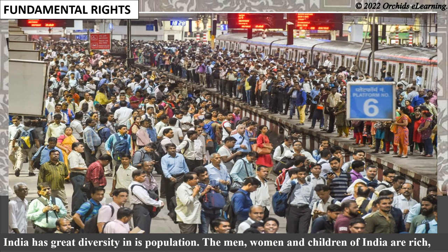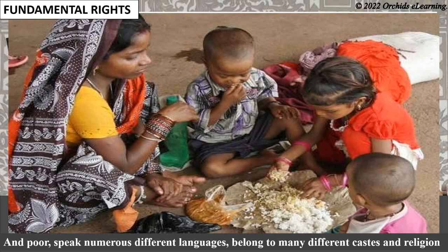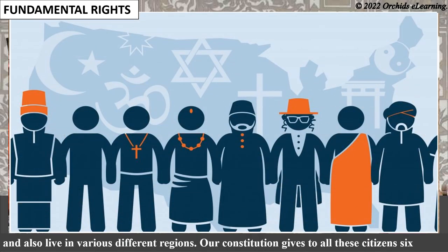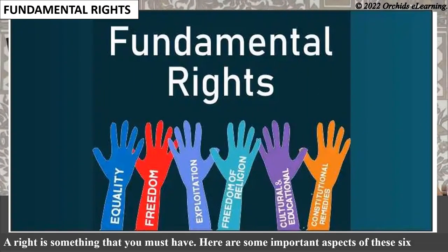India has great diversity in its population. The men, women, and children of India are rich and poor, speak numerous different languages, belong to many different castes and religions, and also live in various different regions. Our constitution gives to all these citizens six fundamental rights. The word fundamental means essential and most important. A right is something that you must have. Here are some important aspects of these six fundamental rights.